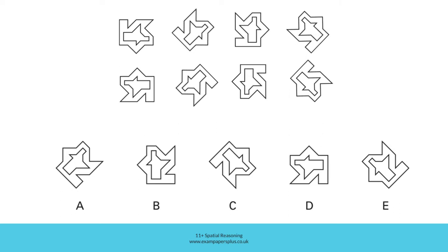Option B is also a reflected version of the figure. Consider the figure in this orientation and if we used a vertical mirror line here, hopefully you can recognise that B is a reflection. Option C, furthermore, is a reflection. It's a reflection of the figure in this orientation using that vertical mirror line here. Therefore, C cannot be correct.